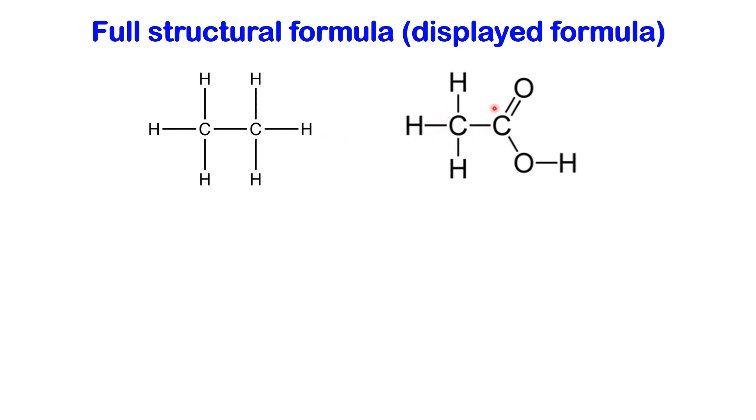In this representation, each covalent bond is denoted by a dash, with a single dash indicating a single bond, two dashes representing a double bond, and three dashes symbolizing a triple bond.